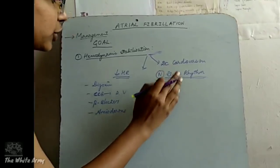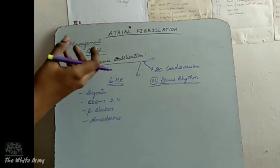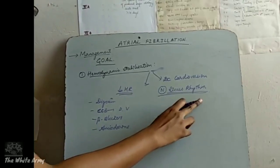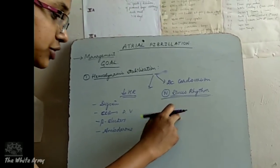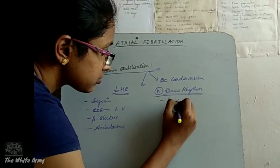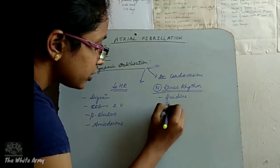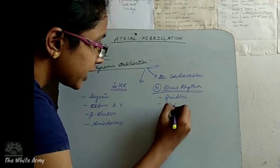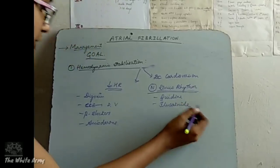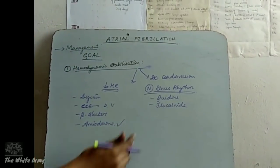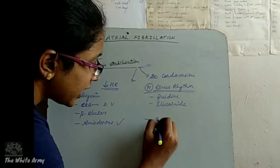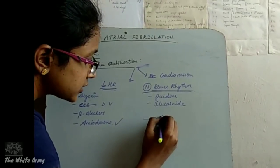To restore the irregular rhythm to normal sinus rhythm, use drugs like quinidine, flecainide, or amiodarone. To prevent complications, also start anticoagulants.